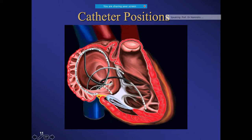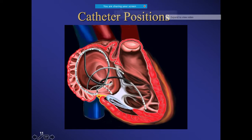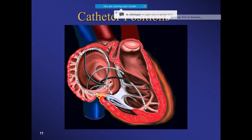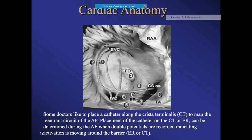On fluoroscopy, you can see these different catheters: the ablation catheter, the RV catheter, the coronary sinus catheter, and the right atrium catheter. In the LAO and RAO views, there is a slight change in catheter orientation. Based on these positions, you assess how the flutter propagation is occurring.